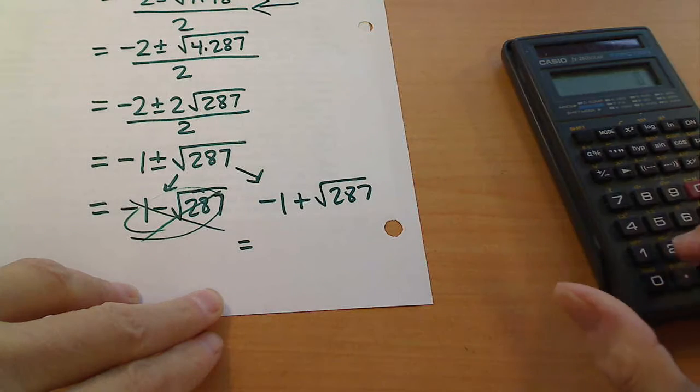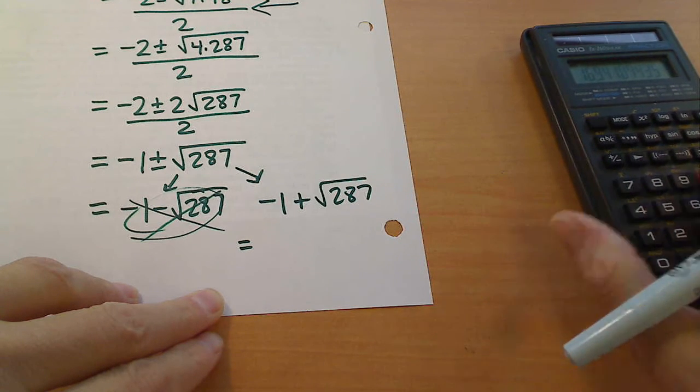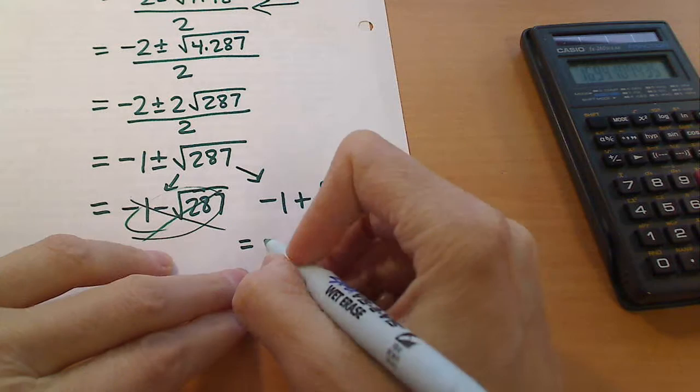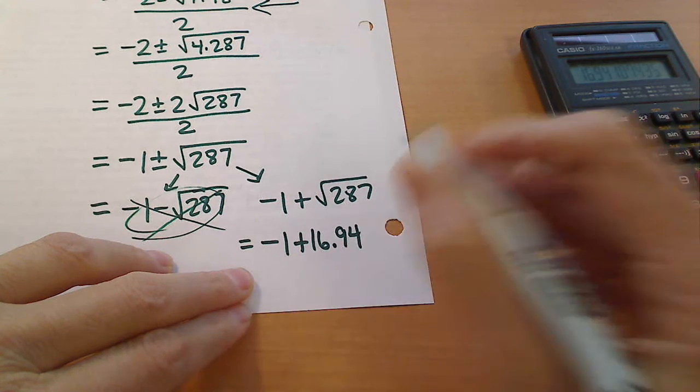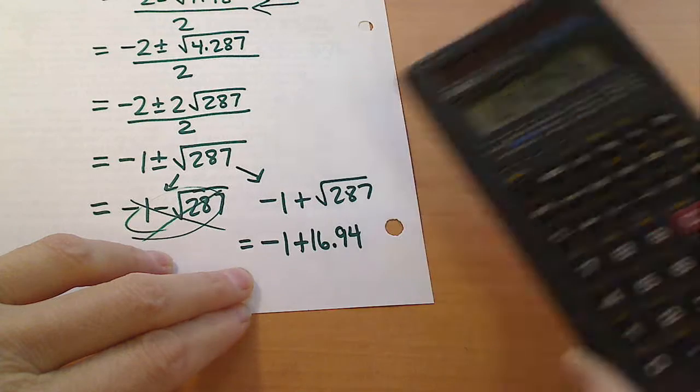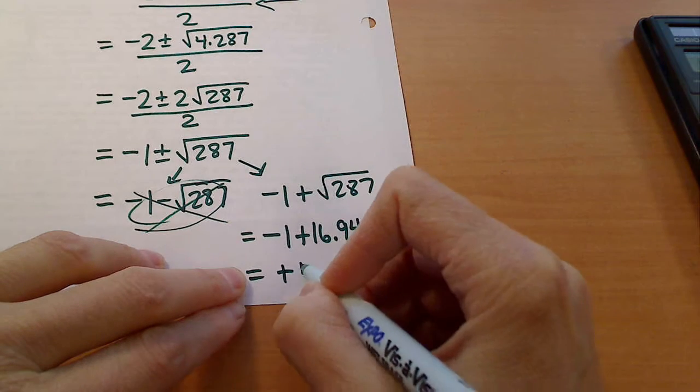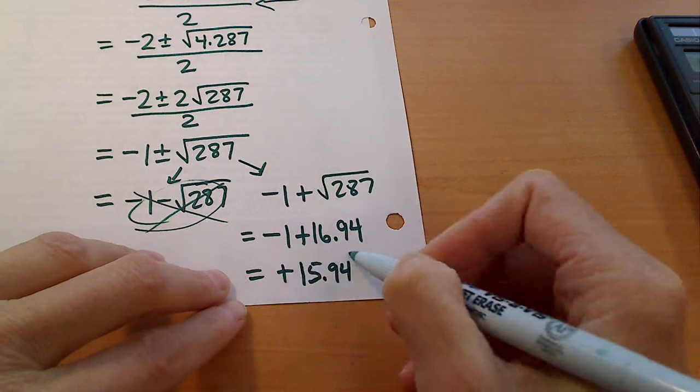I want to get a value for 287, so you're just going to take the square root on your calculator, and they did say to go to the hundredths position, which is the two decimal places. So this is negative 1 plus 16.94 if you do that on your calculator. And so this is really positive 15.94 when we do that math there.